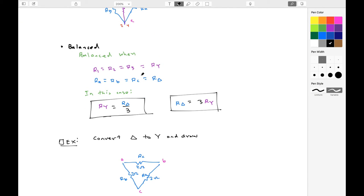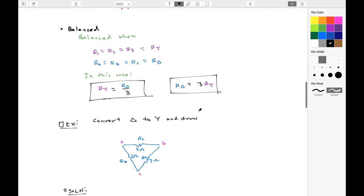A delta or Y network is balanced when all of their resistors are equal. So R1 equals R2 equals R3, which is equal to RY. Or Ra is equal to Rb is equal to Rc, which equals R delta. In this case, RY is equal to R delta over 3, and R delta is equal to 3RY.